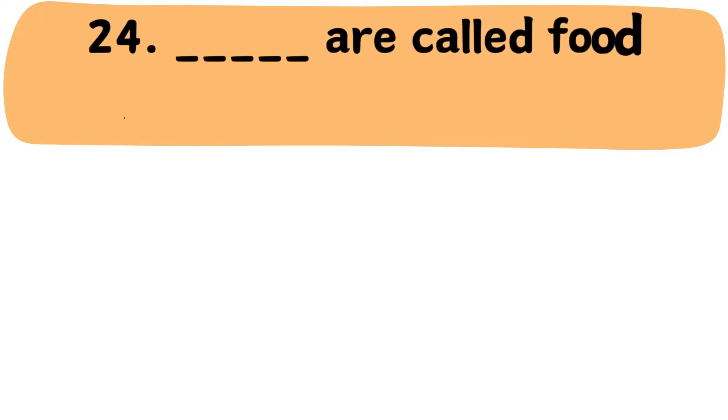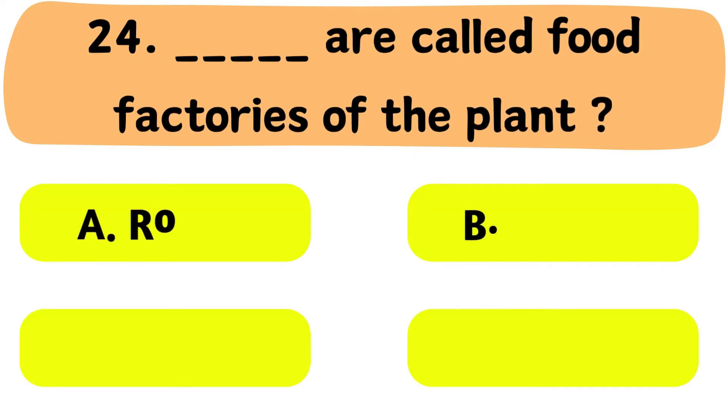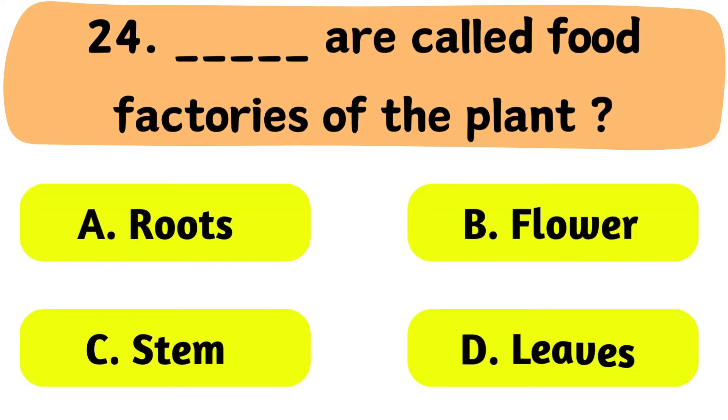Question No. 24: What are called the food factories of the plant? A. Roots. B. Flower. C. Stem. D. Leaves.